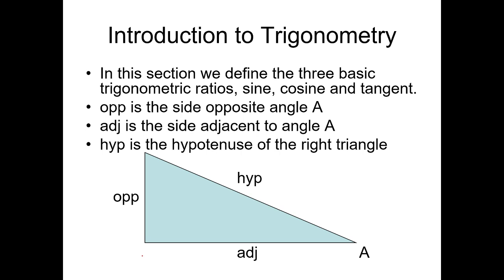Now, we have been introduced to trigonometry. Let's just have a recap because we are going to solve some problems about right triangles. In this section, we define the three basic trigonometric ratios: sine, cosine, and tangent. Opposite is the side opposite to angle A. Adjacent is the side adjacent to angle A. Hypotenuse is the hypotenuse of the right triangle.